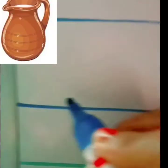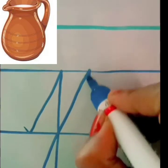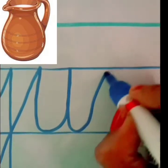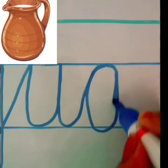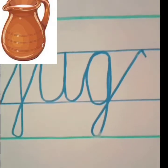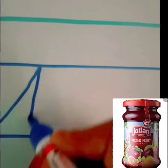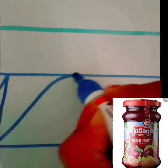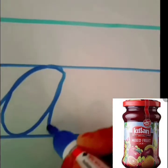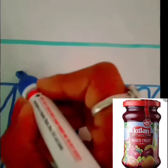Next, J for jug. J, U, G, jug. And J for jam. J, A, M, jam.